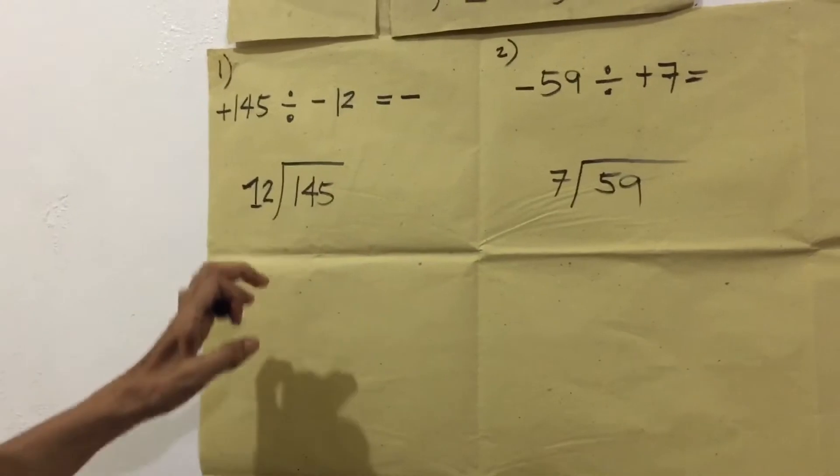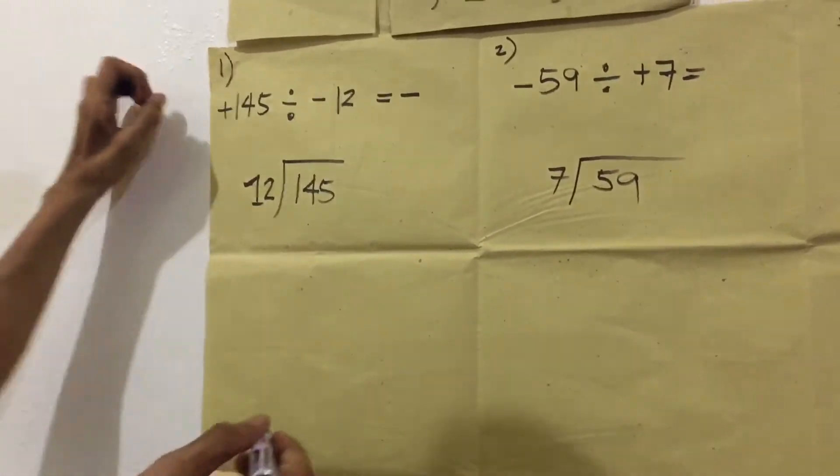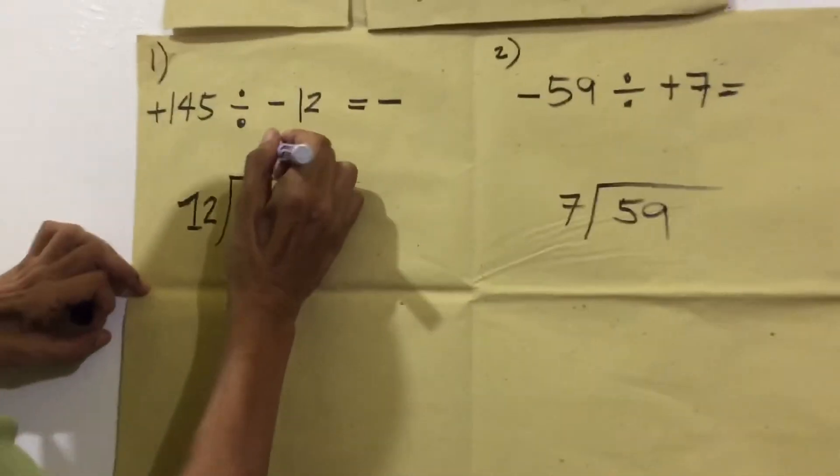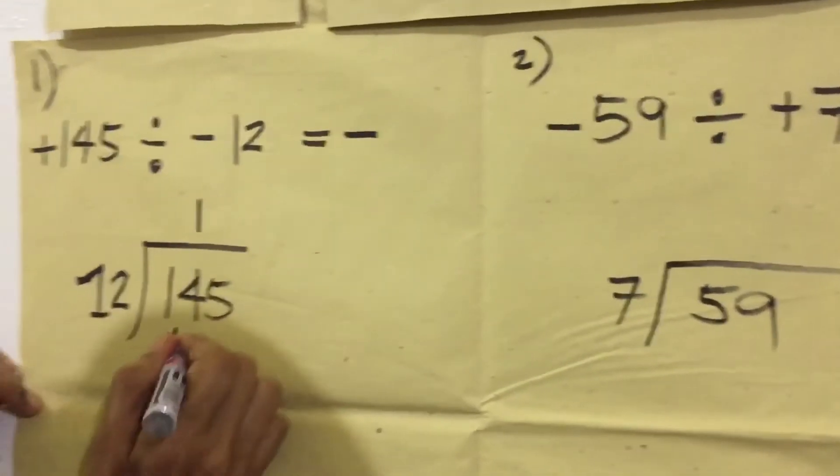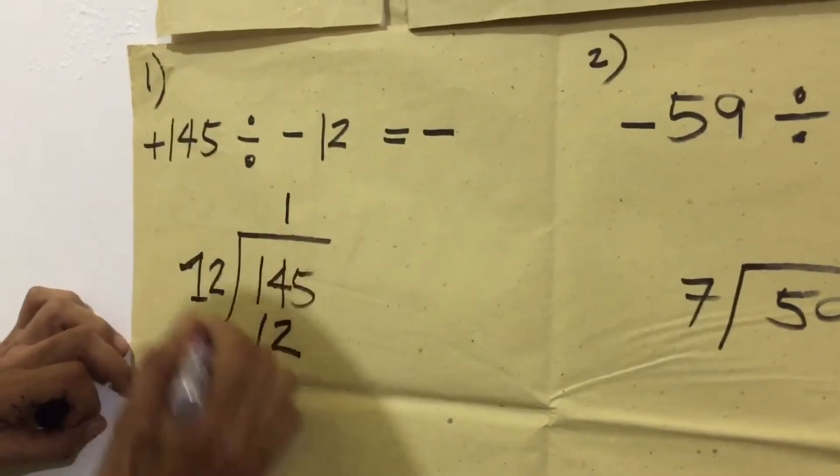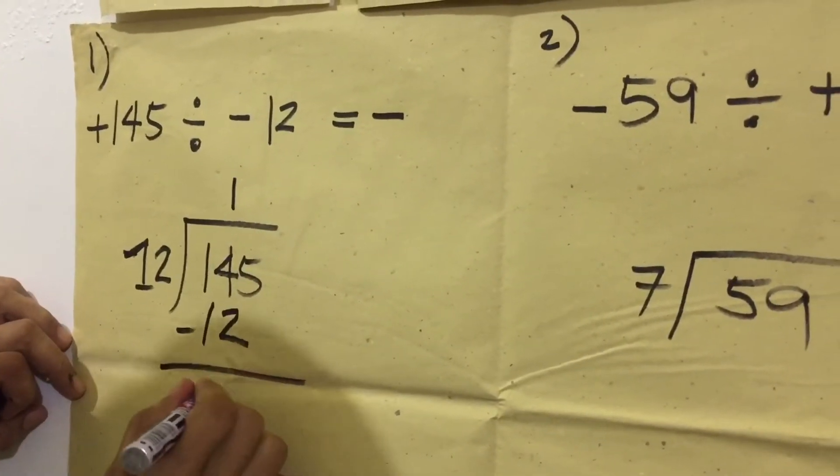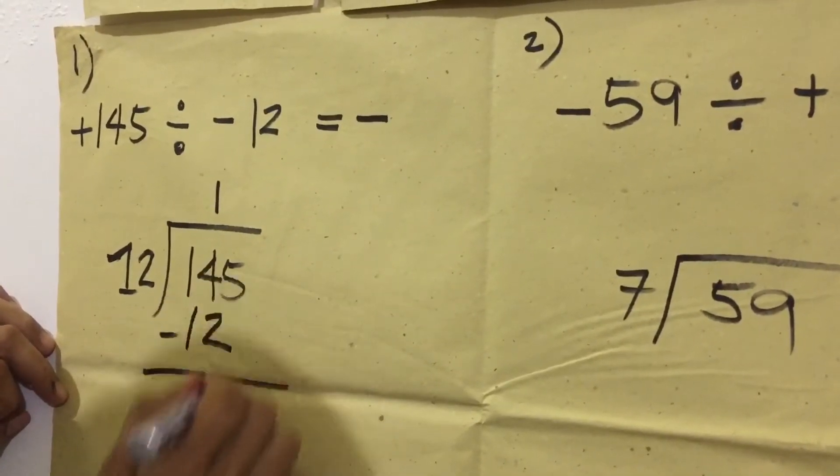Then, itidivide natin na wala na siyang kasamang sign. Kasi pag may makasama pa siyang sign, malilito tayo. Kaya, 14 divided by 12 equals 1. Product here, multiply 1 times 12. Minus, we have 2. Then bring down 5.